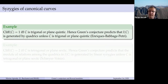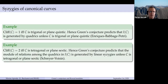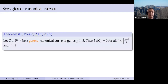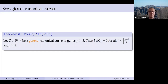Clifford index two if and only if C is either tetragonal or a plane quintic. In this case, Green's conjecture predicts that the module of relations among the quadrics is generated by linear relations unless C is tetragonal or a plane quintic — this is the theorem of Schreyer and Voisin. The most important result in this theory is due to Voisin, proved in two separate papers according to the parity of the genus: first the even genus case, then the odd genus case.